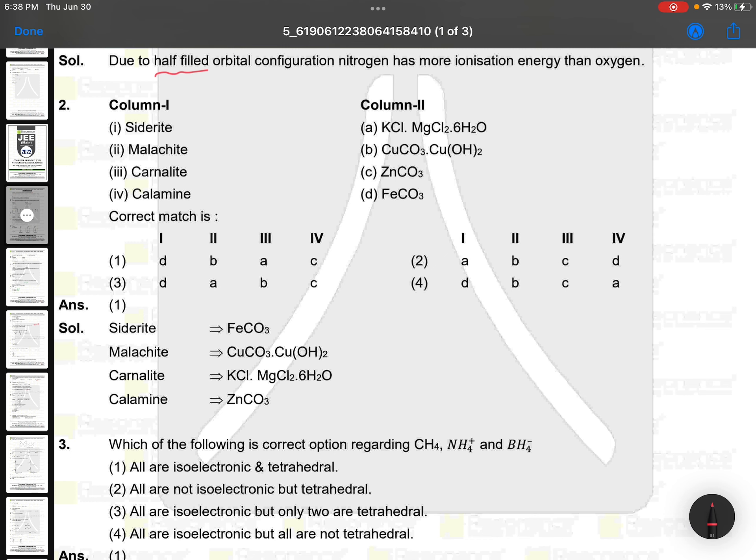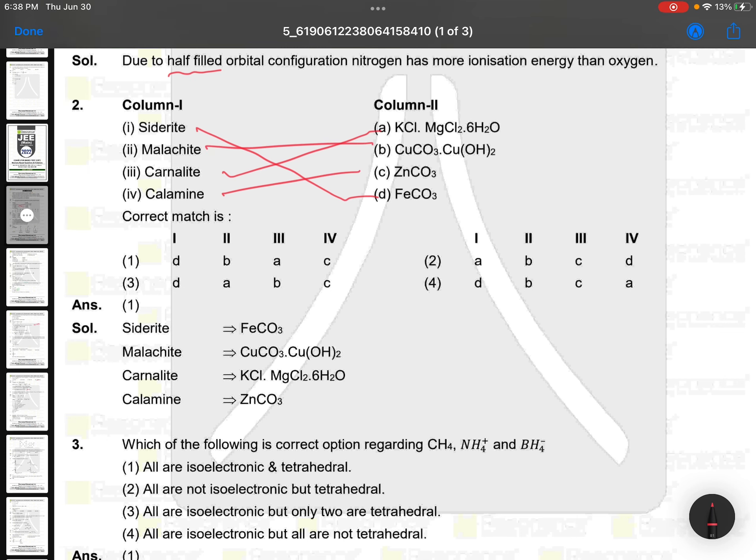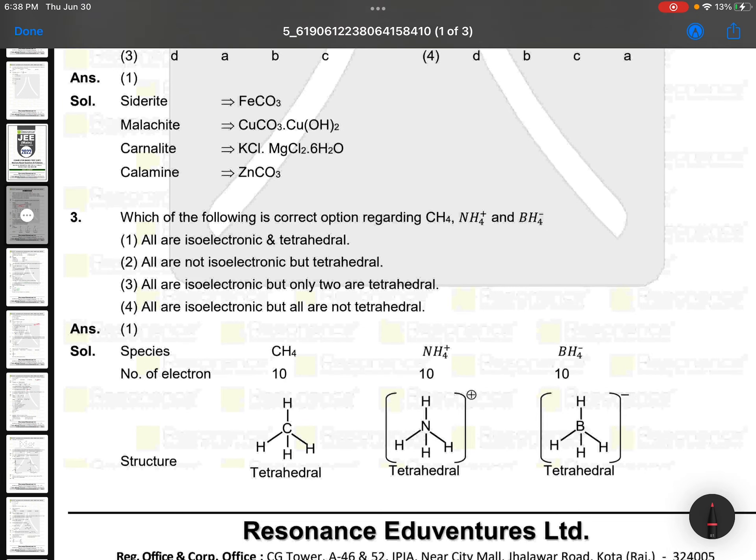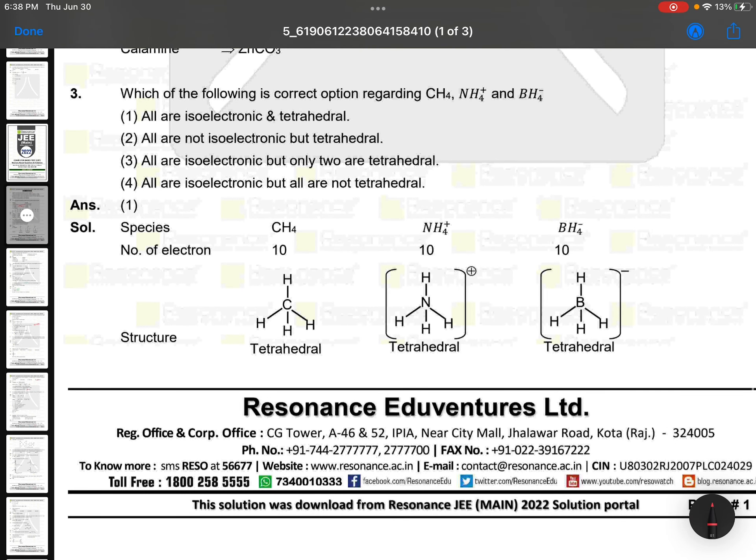Column one: Siderite - FeCO3, Carnallite - KCl·MgCl2·6H2O, Calamine - zinc carbonate, Malachite - direct question from metallurgy, very easy.